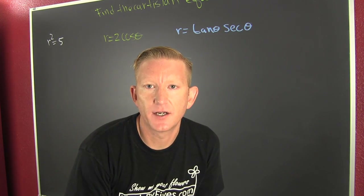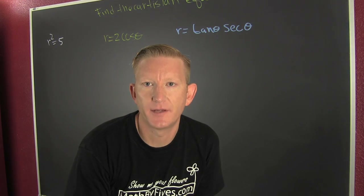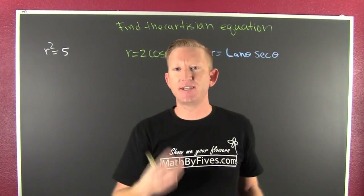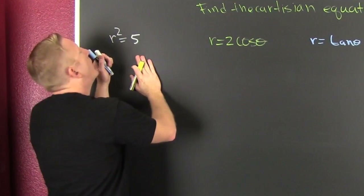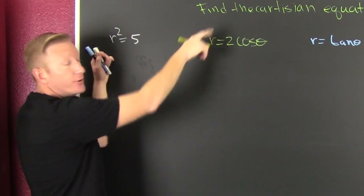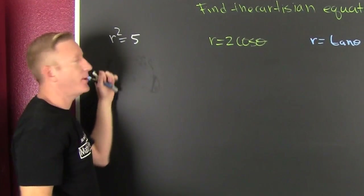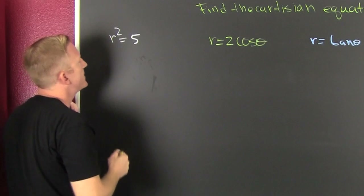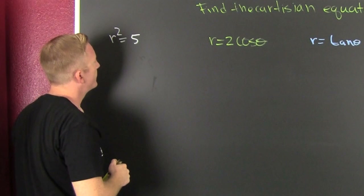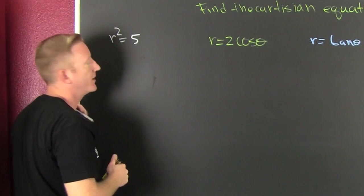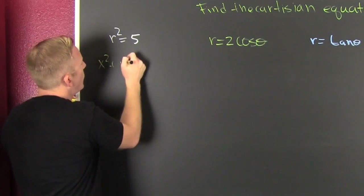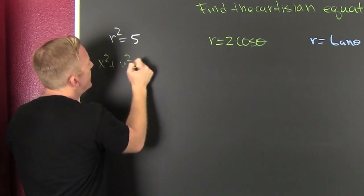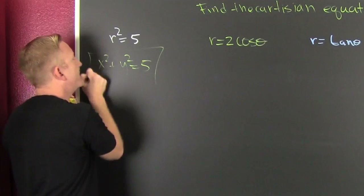If they give us polar and we want to find the Cartesian, we're gonna have to do a couple of things. I have three examples. Let's get into the first. I have this polar equation and I'm trying to create the Cartesian equation. r² = x² + y², so x² + y² = 5. You're done.